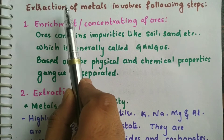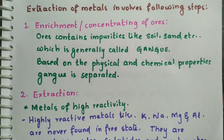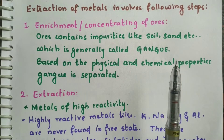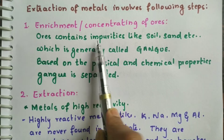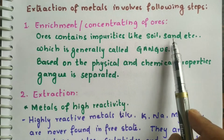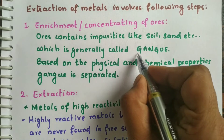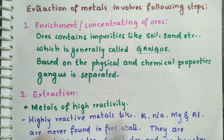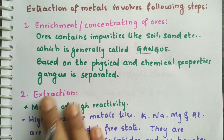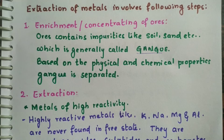Metals are extracted from their ores in three steps: enrichment, extraction, and refining. In the enrichment or concentrating of the ores, we wash off all the impurities — commonly called gangue. Based on physical and chemical properties of the gangue, it is separated; for example, magnetic separation is used when the gangue is attracted by a magnet.